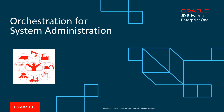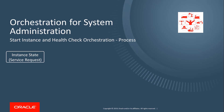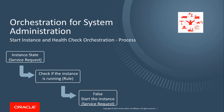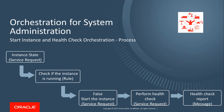For the purpose of this tutorial, we will create a start instance and health check orchestration. This orchestration will retrieve the status of an instance, check if the instance of the server is running, and if not, start the instance, perform a health check for that instance, and send a message with the health check report.